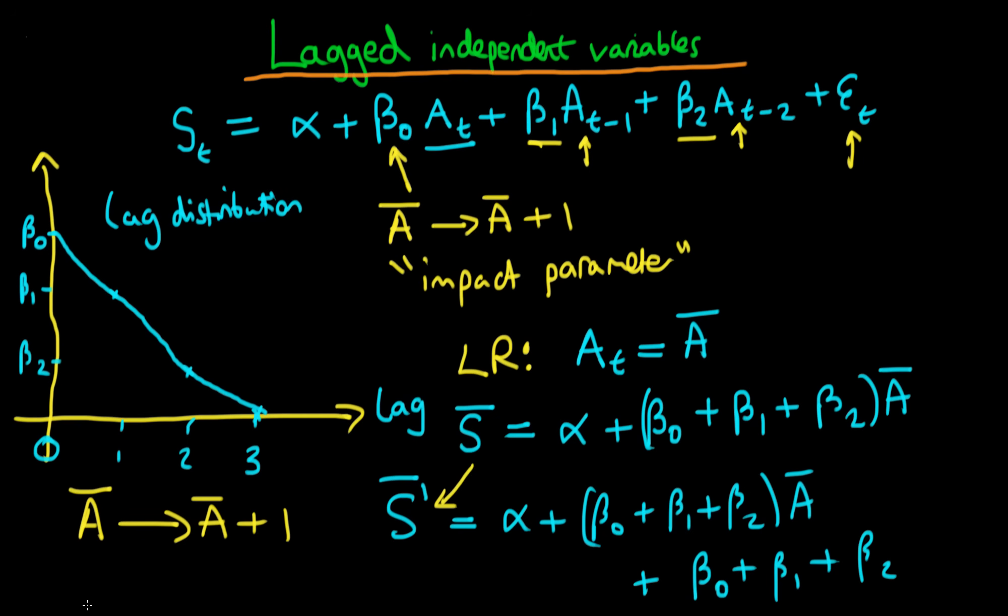So the sum of the coefficients on the independent variables in a model determines the long-run effect of a change in advertising on sales, and we call that beta LR.